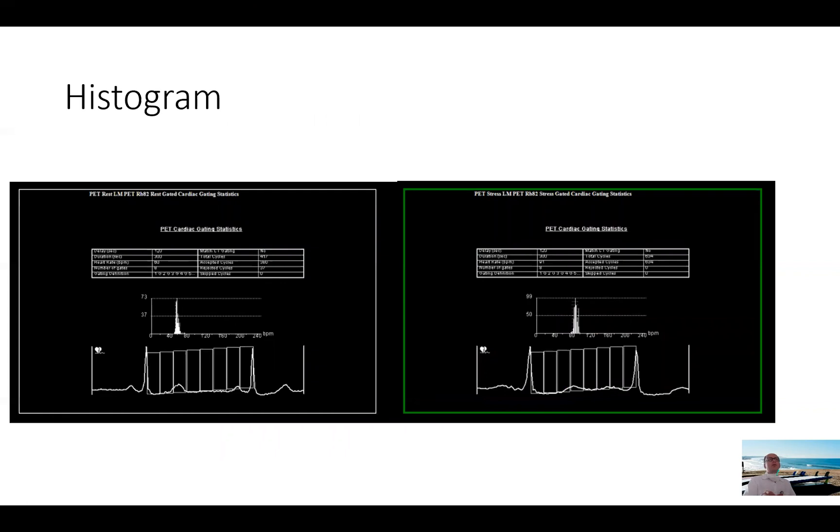One other thing we look at before we move on to look at the gated images is to look at the histogram to make sure that we capture the images for the gated images all within some reasonable heart rate without extra ectopy. This is a difficult problem to deal with after the fact, especially with PET because of the short half-life of rubidium. So you want to make sure that this is correctly acquired at a stable heart rate. On the left hand side of the screen, you can see this is the rest images where the heart rate was almost 70 with a very narrow tight histogram. And similarly here, post-stress, the heart rate went up as expected with regadenoson to about 80-85, again with a very narrow histogram.